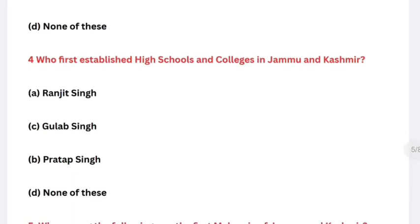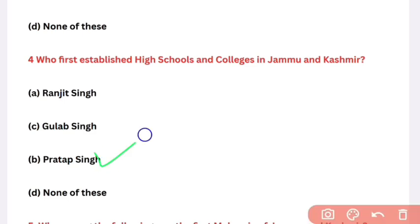Question: Who first established high schools and colleges in Jammu and Kashmir? Options: Ranjit Singh, Gulab Singh, Pratap Singh, None of these. The right answer is option B — Pratap Singh. We have not yet covered Pratap Singh; we will read about him in the next video. High schools and colleges were established during Pratap Singh's rule.